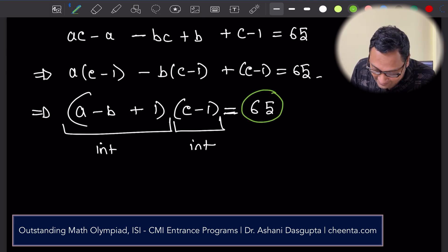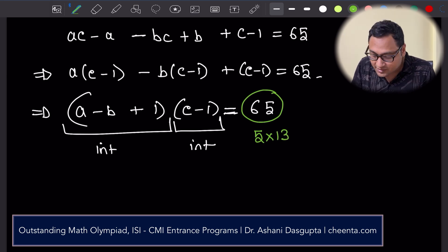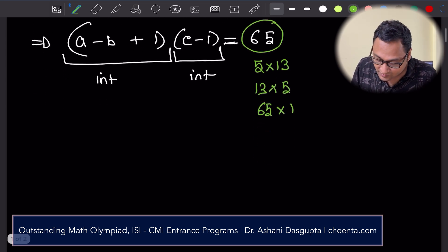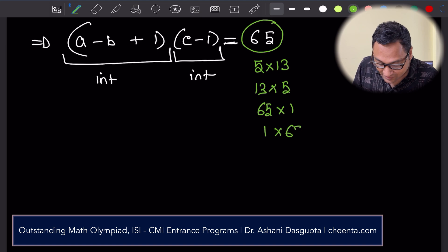So 65 can be factorized as 5 times 13, or you could use a different order, 13 times 5. Similarly 65 times 1 and 1 times 65.